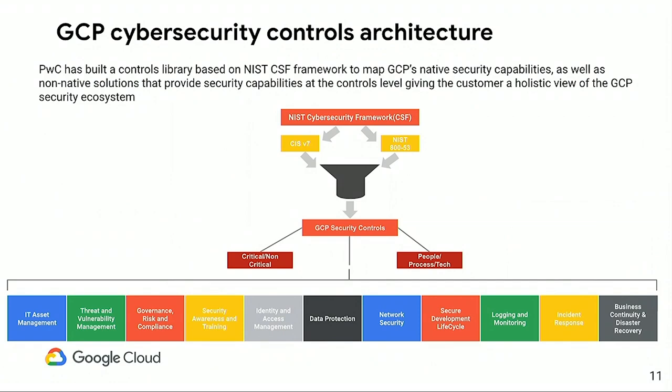The first dimension is controls. We adopted NIST 800-53 — the most comprehensive and stringent US framework — coupled with CIS version 7 for technical hardening standards. We mapped them together, created specific controls for GCP, identified critical versus non-critical controls, and distinguished which are automated, process-oriented, or people-dependent. We also identified which controls are native within GCP versus requiring third-party solutions, giving us a baseline to measure adoption against.